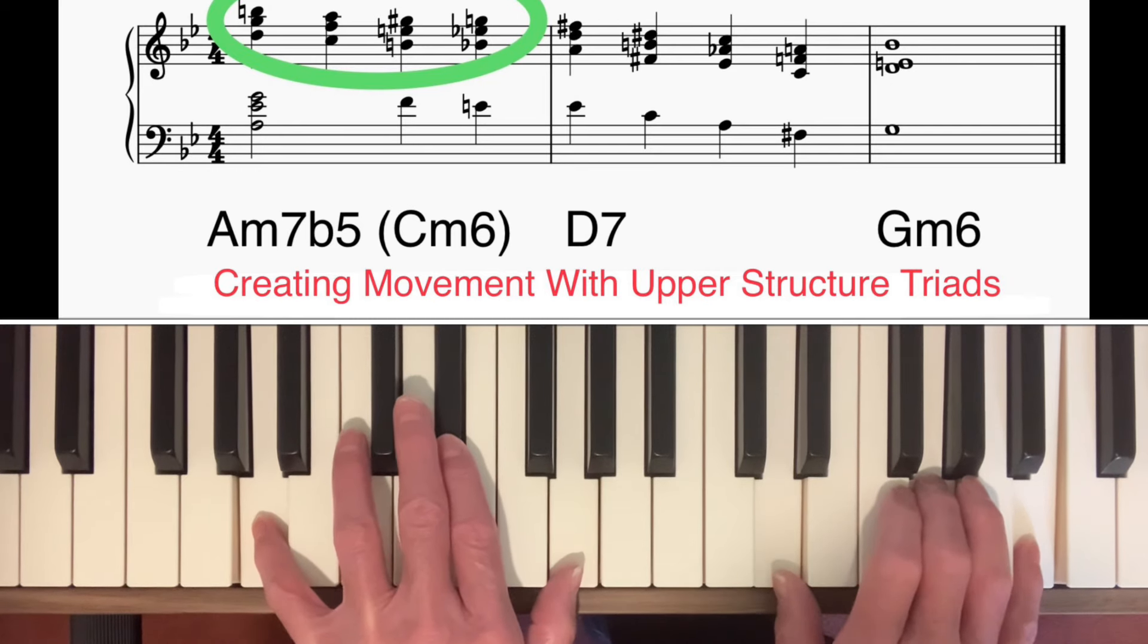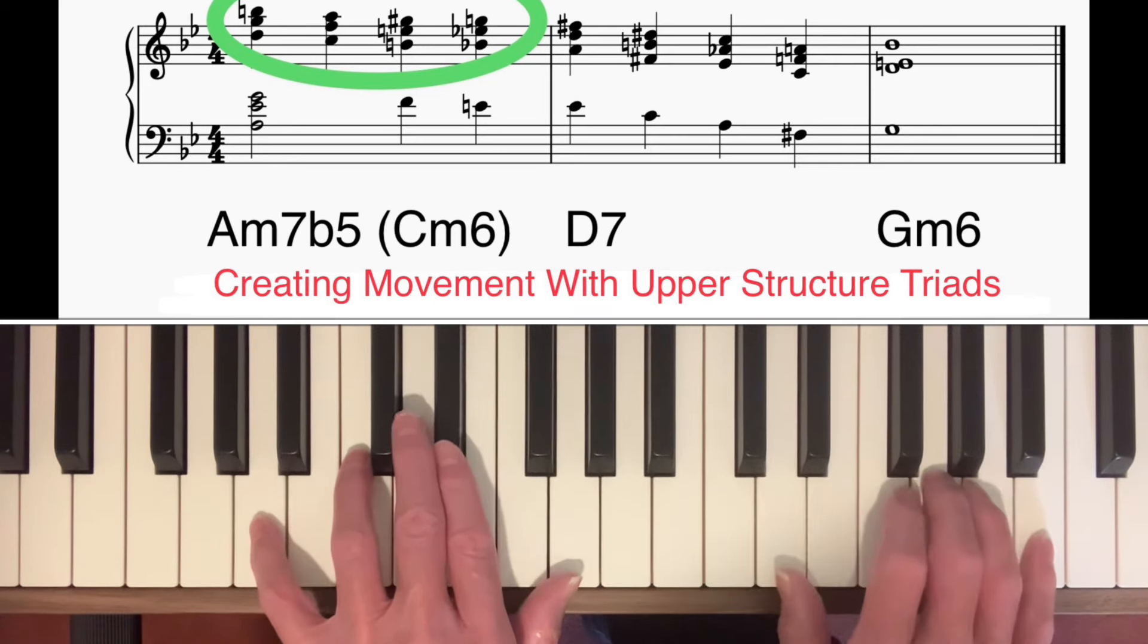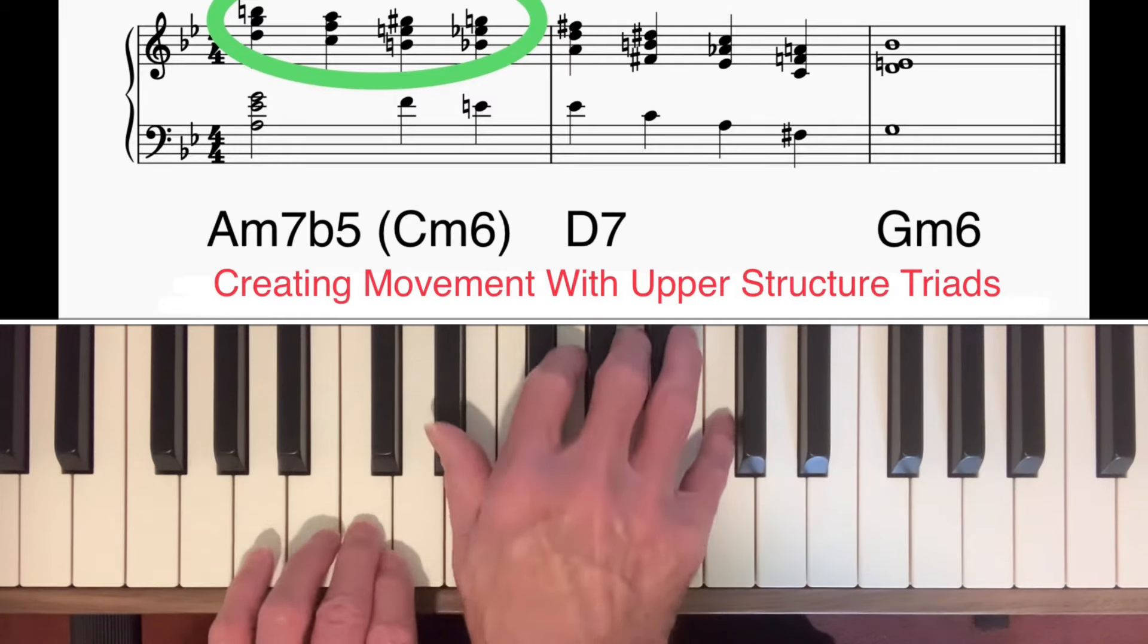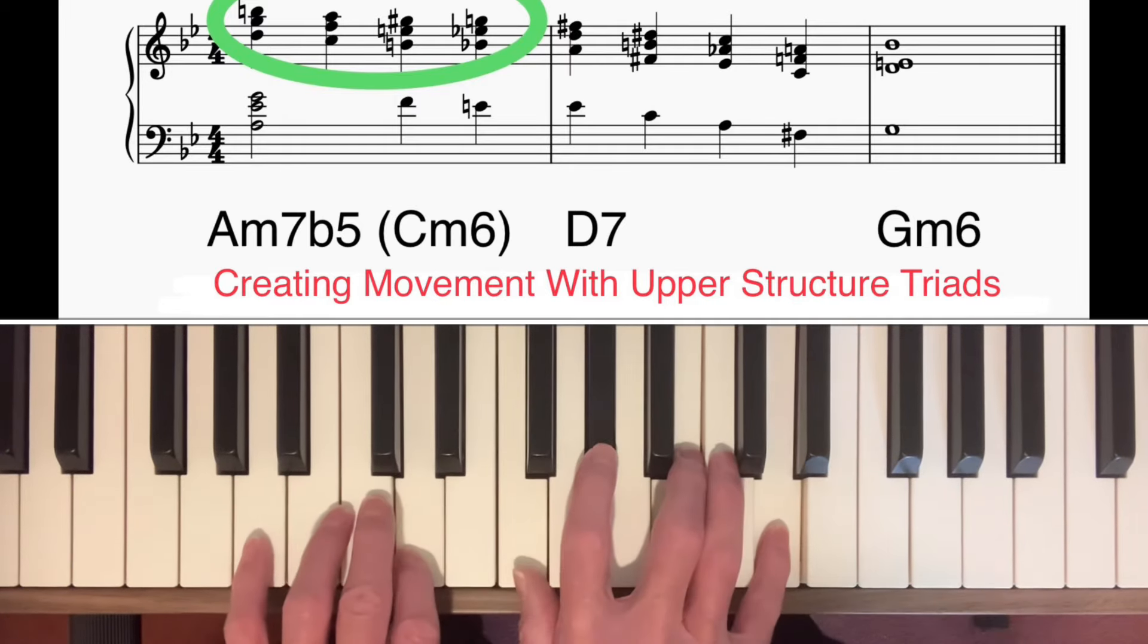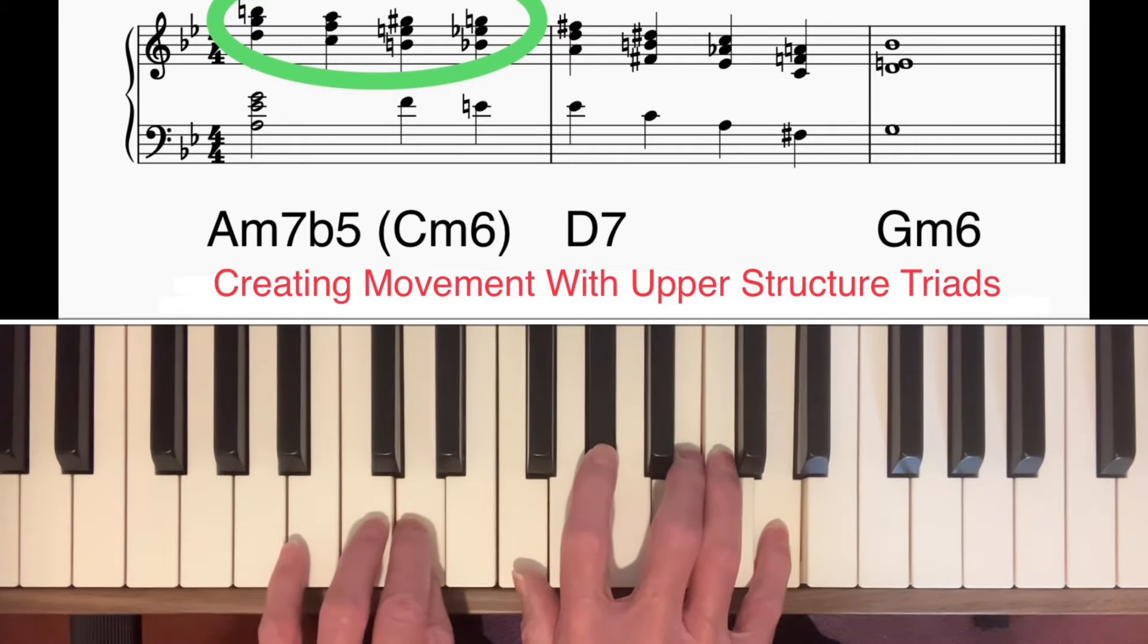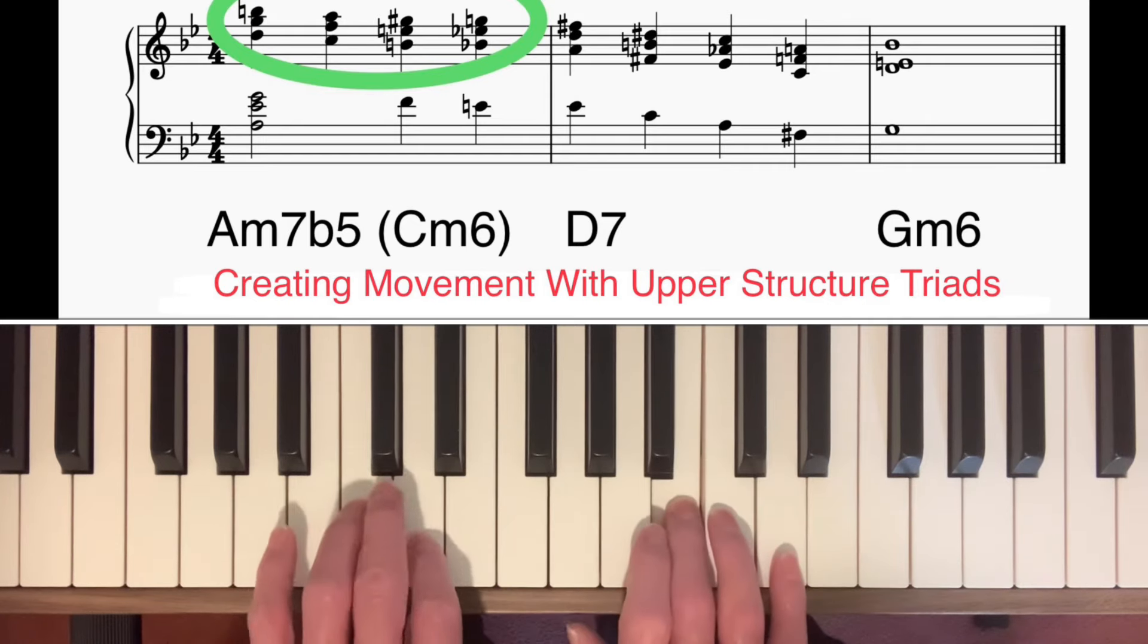Well, Barry Harris would have explained that by saying that the note G is part of the chord. It's the 7th, so that obviously works. The D and the B, he would say, have been borrowed from the diminished 7th chord in the minor 6 diminished 7th scale. There's the diminished 7th chord and it contains the notes B and D.